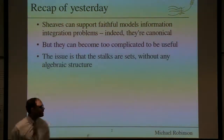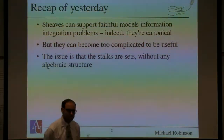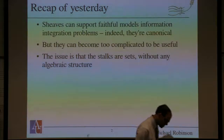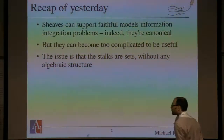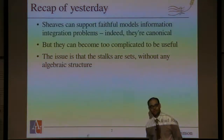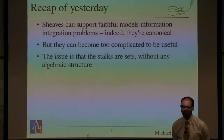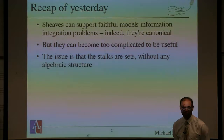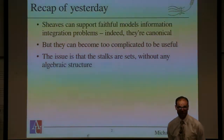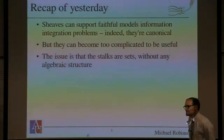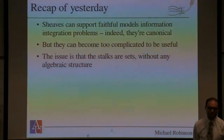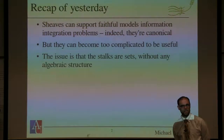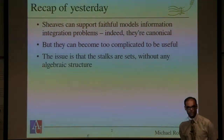Quick review of what we talked about yesterday: sheaves can build specific models that are faithful, accurately representing heterogeneous information frameworks, and we looked at a whole bunch of models. Unfortunately they can get really complicated. If you're looking for a full-fidelity model of a complicated and potentially large data system, you're going to have all of the complexity and size that comes with it. So we need to be able to summarize that in some fashion. The major problem with large data systems is a lack of algebraic structure — there's quite a collection of different kinds of algebraic structure that don't fit together in a reasonable fashion.